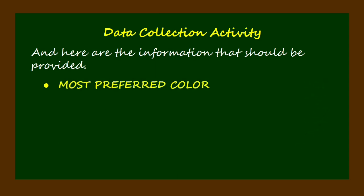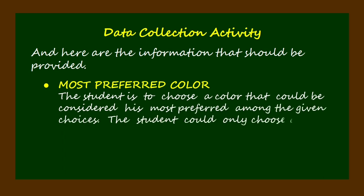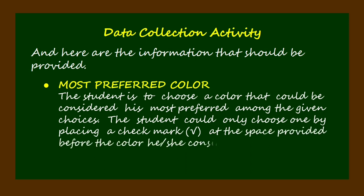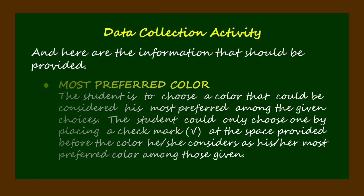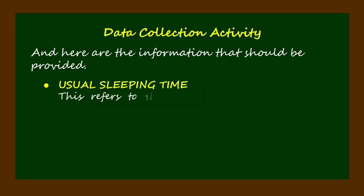Most preferred color — the student is to choose a color that could be considered his or her most preferred among the given choices. The student could only choose one by placing a check mark at the space provided before the color he or she considers as his or her most preferred color among those given.